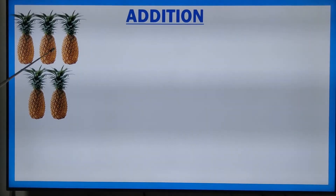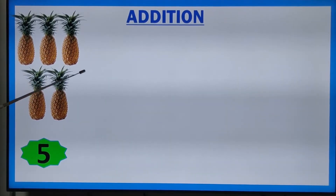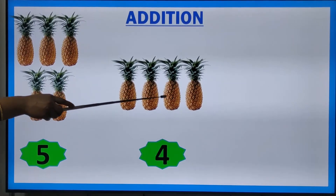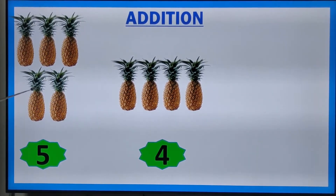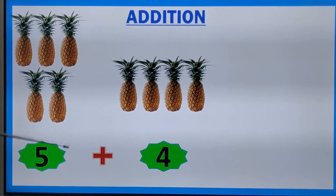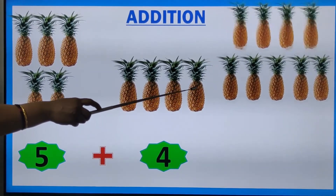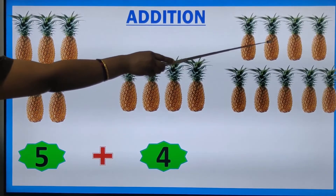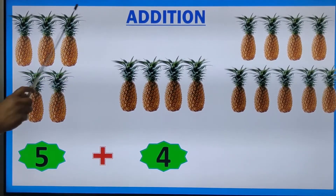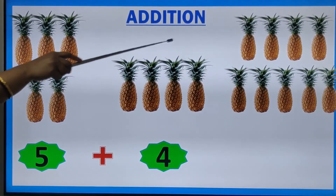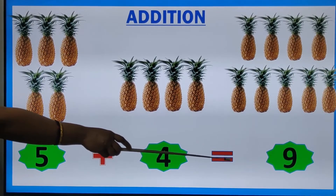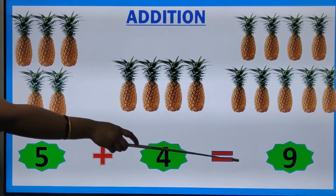How many pineapples are there? One, two, three, four, five. Now we are adding four pineapples with this — one, two, three, four. Here already five pineapples are there. Five plus four pineapples together — one, two, three, four, five, six, seven, eight, nine. Five plus four is equal to nine.